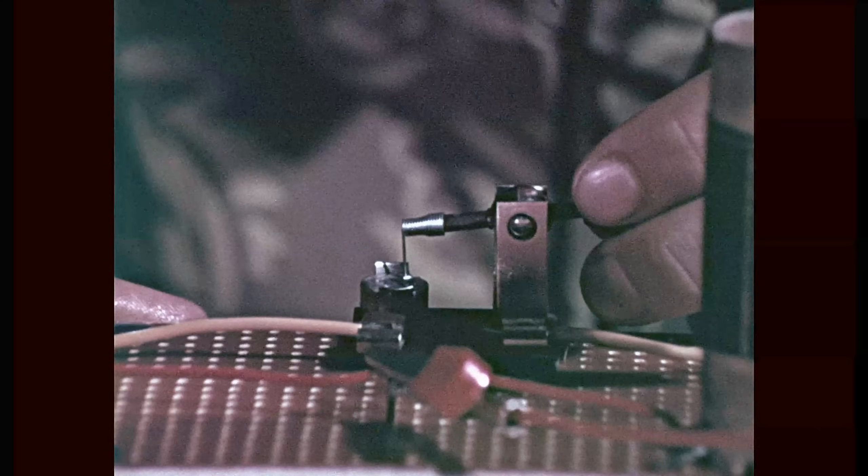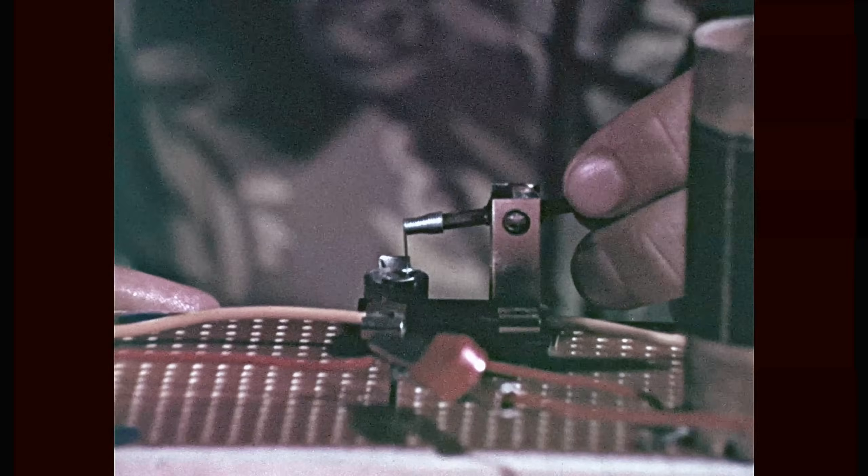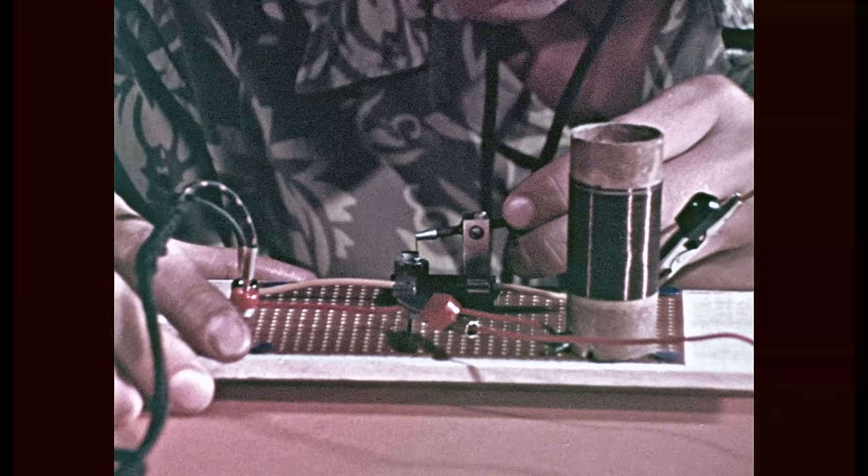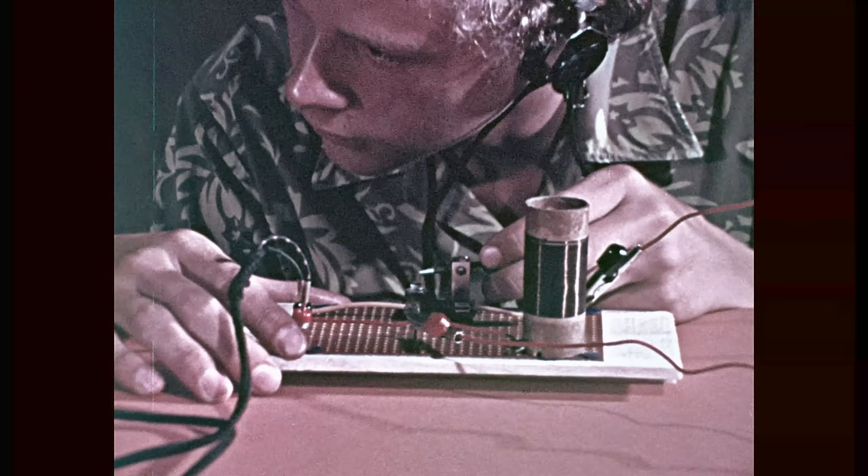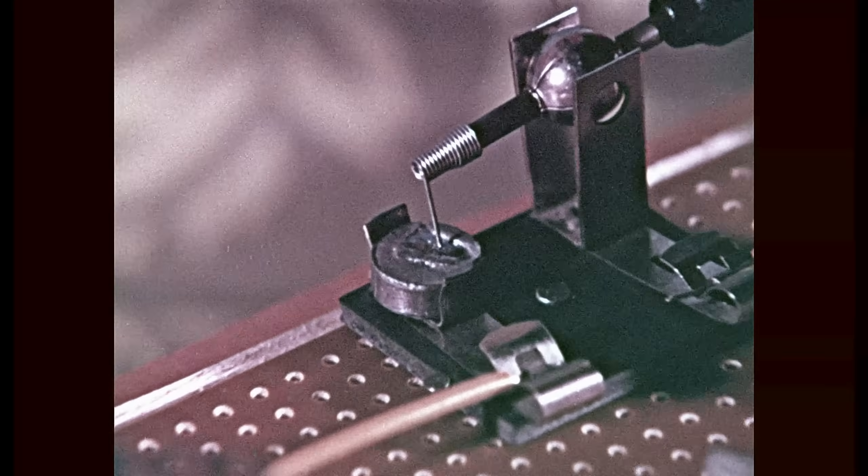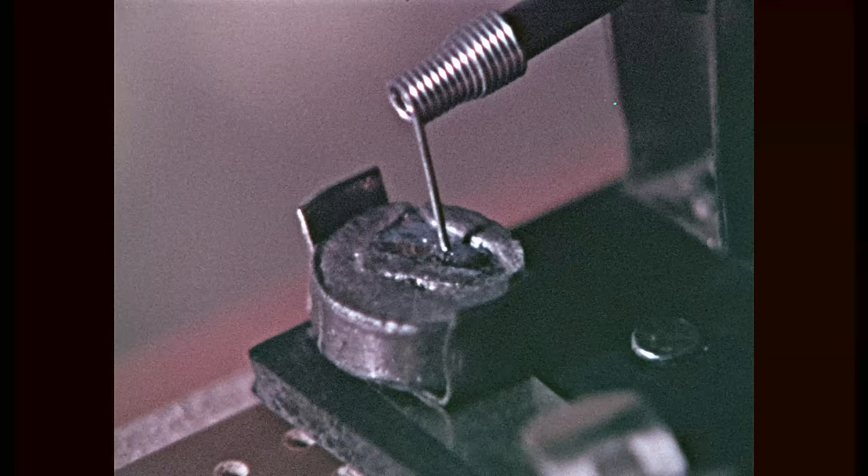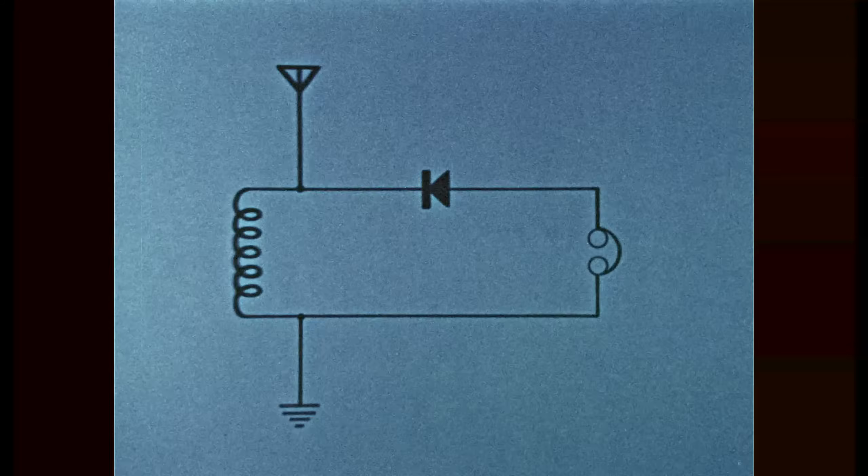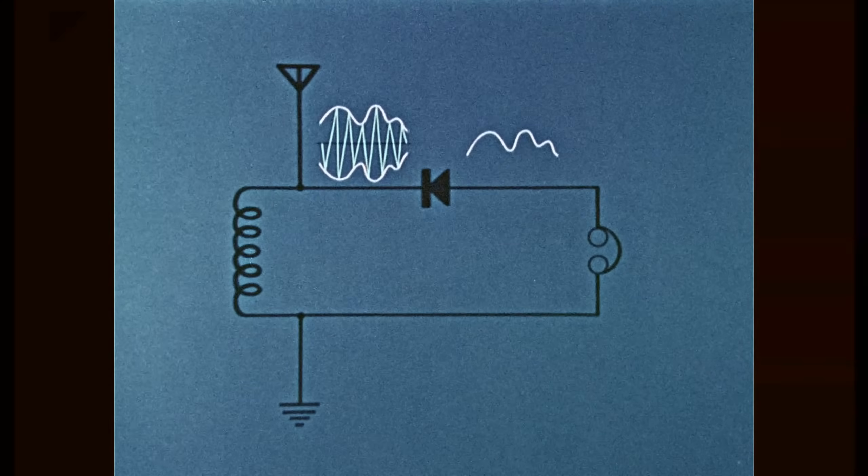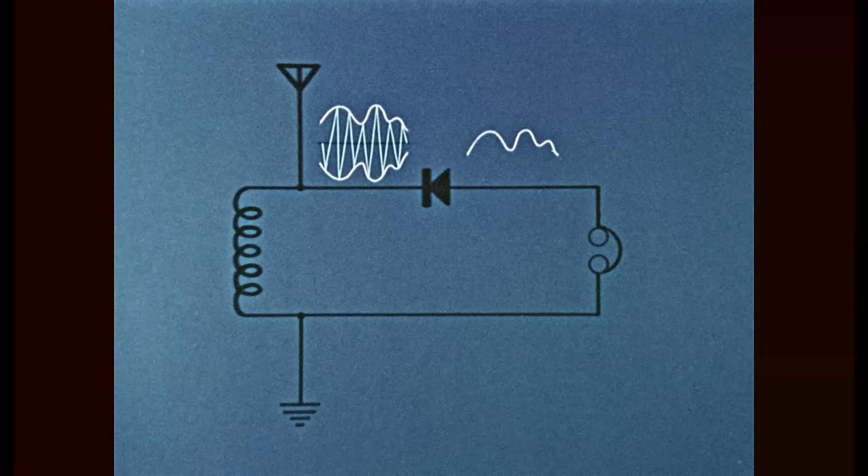The first home receiver used to pick up or detect this signal was the crystal set. It can still be made today. A coil of wire was used to improve the antenna circuit. A small piece of mineral crystal could detect the carrier signal and separate the audio signal from it, so that the original sound could be heard on an earphone.